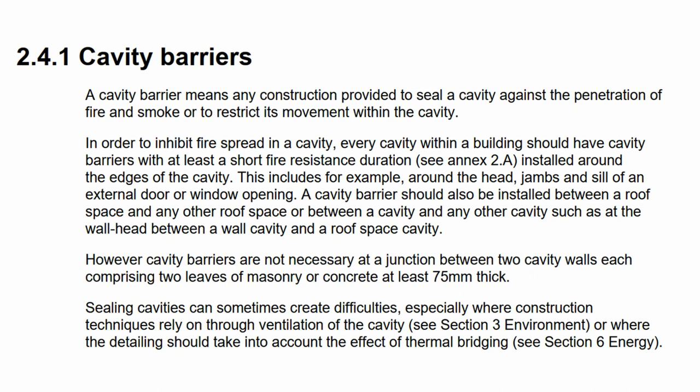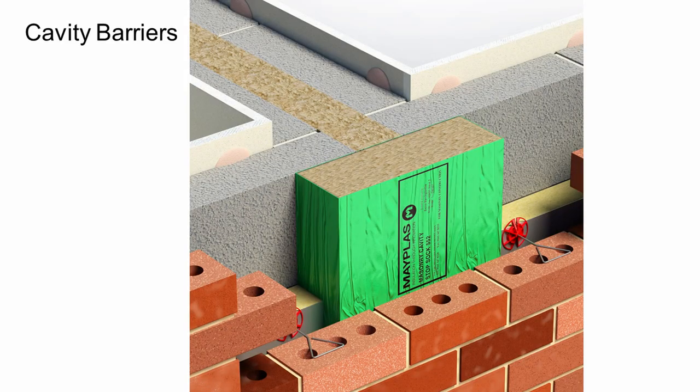A cavity barrier is slightly different from a cavity closer. A cavity closer can mean something that's not fire rated that closes off a cavity, whereas a cavity barrier is specifically designed to inhibit the spread of fire. Usually they are a mineral wool product, wrapped in a plastic sheet, designed to fill the whole gap between two layers of masonry. Because they're made of mineral wool, they do participate within the insulation envelope of the building, so it's not a significant break to move from one insulation to the next when installing a cavity barrier.